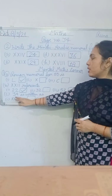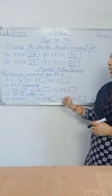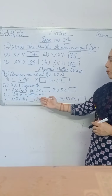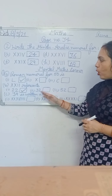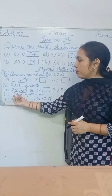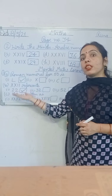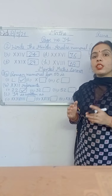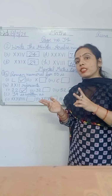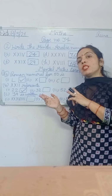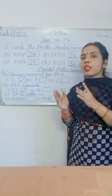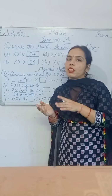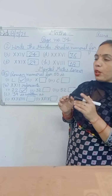Now part C: 39 is written as — you have been given options in Roman numerals. How do you write 39 in Roman numeral? 39 means XXX (which is 30) and IX (which is 9), so XXX IX means 39 in Roman numeral.